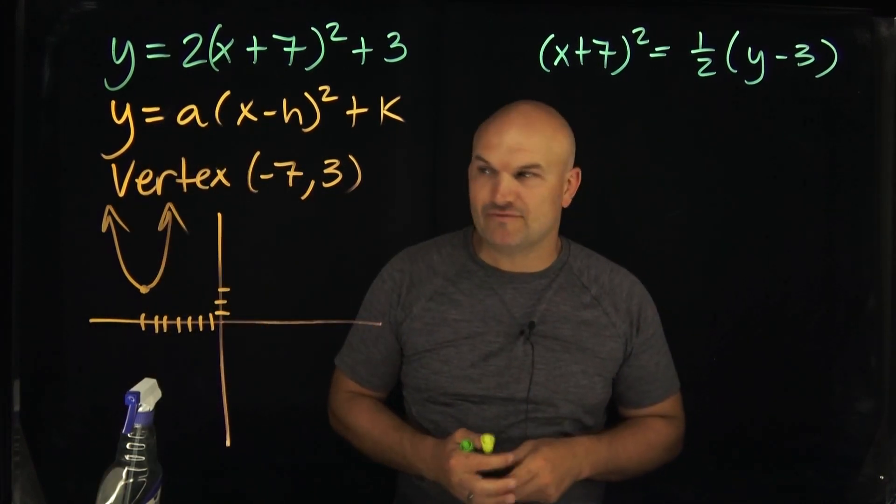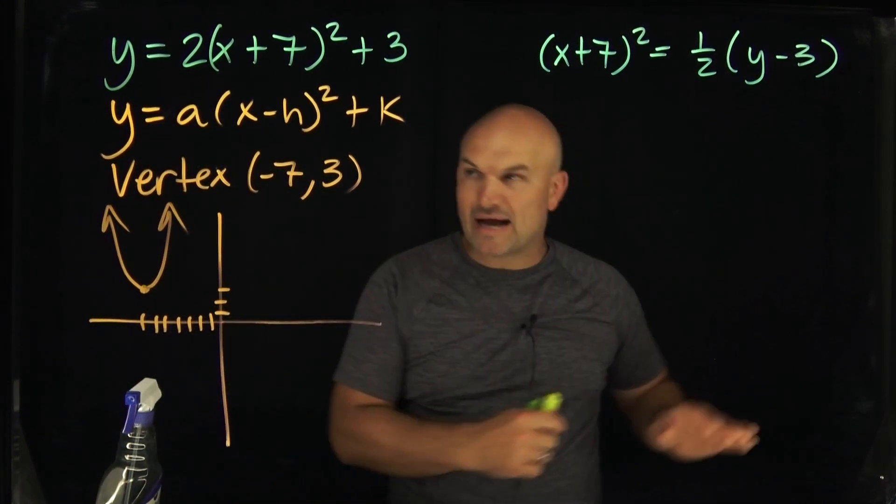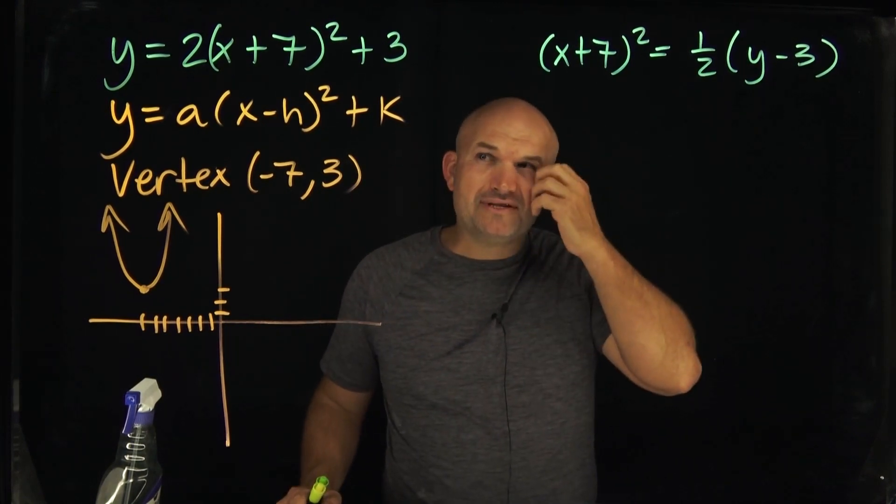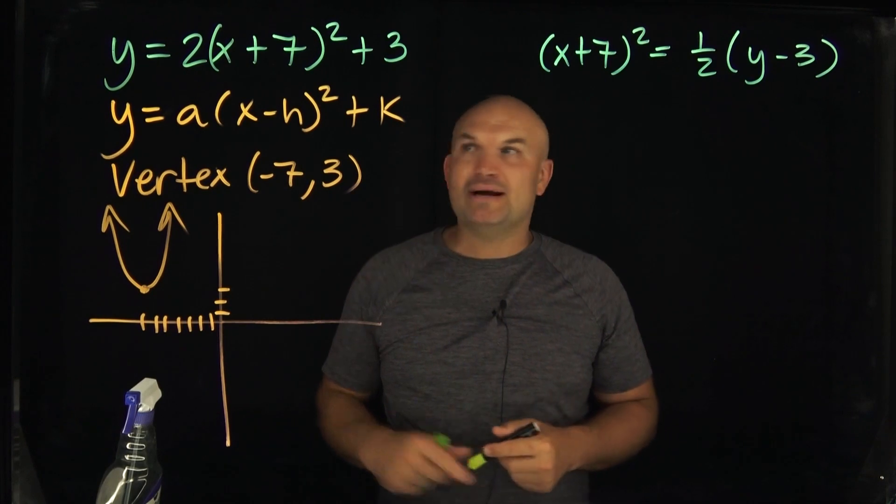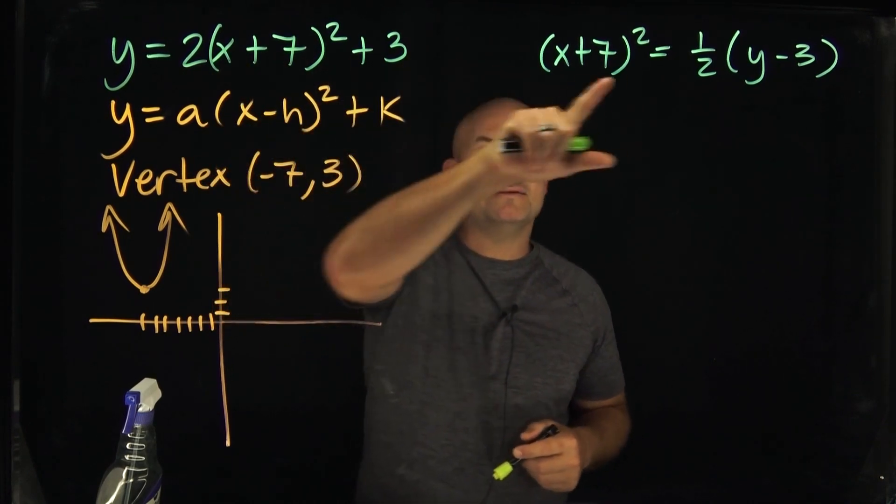So that is going to be the parabola in vertex form. And then once we get into parabolas in conic sections, a lot of students are like, are those the same parabola? How do these compare? What exactly are we doing? And so what I want to do is just show you how do we go from here to there?